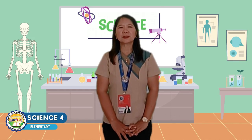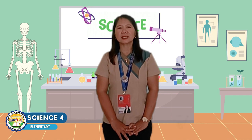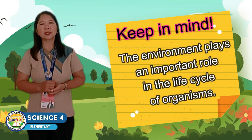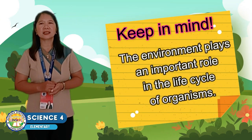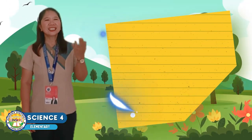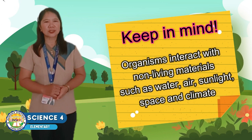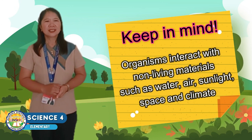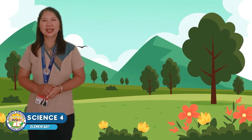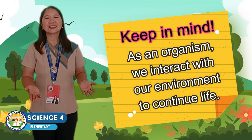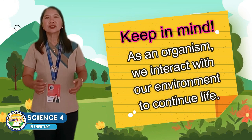Keep in mind the following big ideas in our lesson for today. The environment plays an important role in the life cycle of organisms. Organisms interact with non-living materials such as water, air, sunlight, space, and climate. As an organism, we interact with our environment to continue life. Continue reading your notes to better understand the lesson.